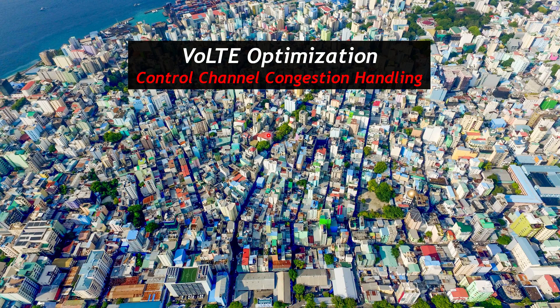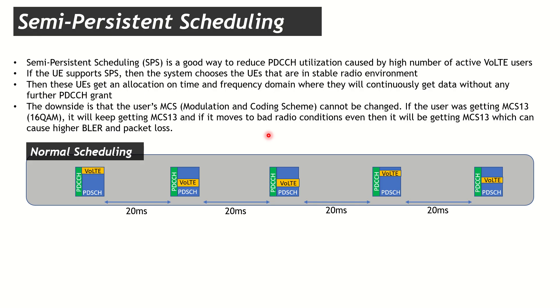Hello everyone, today we will have our first session on VoLTE optimization. This session will focus on control channel congestion handling, because in our last session we discussed control channel congestion and found out that the biggest bottleneck for VoLTE congestion or VoLTE capacity limit is the PDCCH, which is the control channel. Let's see what we can do to handle control channel congestion in VoLTE.